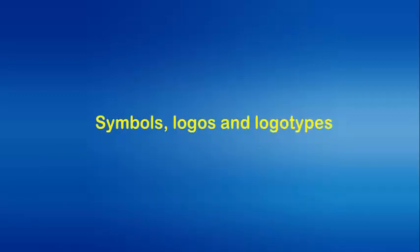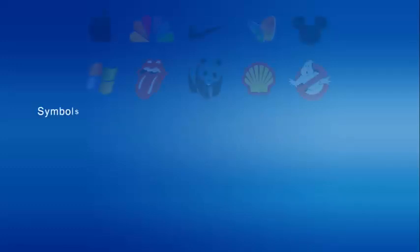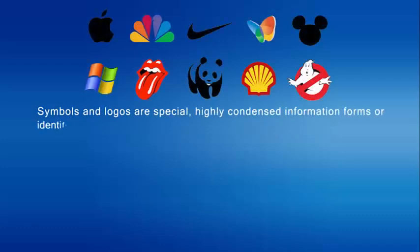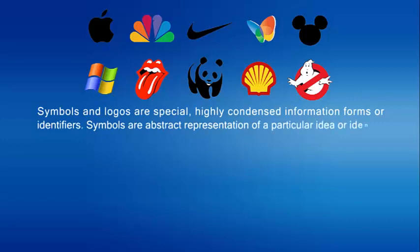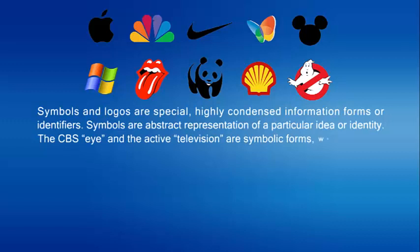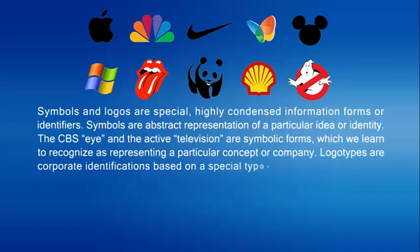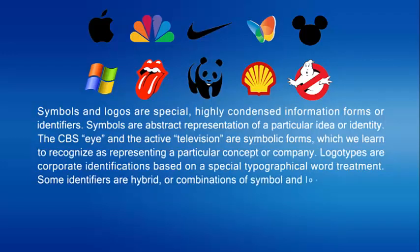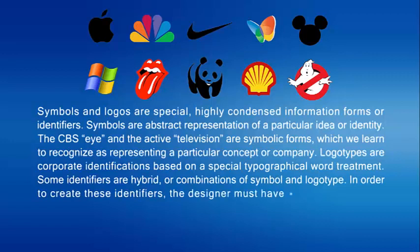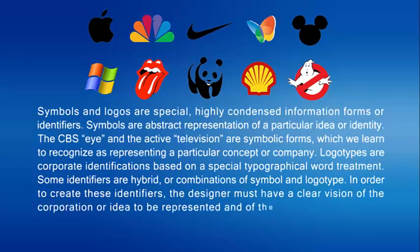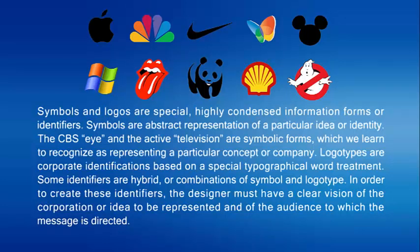Symbols, logos and logotypes. Symbols and logos are special, highly condensed information forms or identifiers. Symbols are abstract representations of a particular idea or identity. The CBS eye and the NBC television logo are symbolic forms which you learn to recognize as representing a particular concept or company. Logotypes are corporate identifications based on a special typographical word treatment. Some identifiers are hybrids or combinations of symbol and logotype. In order to create these identifiers, the designer must have a clear vision of the corporation or idea to be represented and of the audience to which the message is directed.